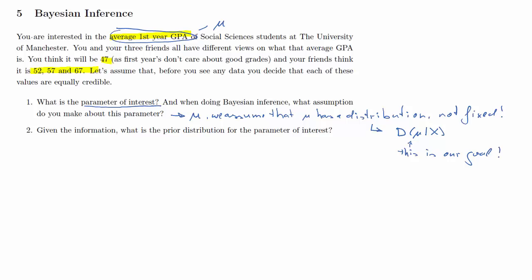So now, if we have that information, what is the prior distribution? We'll see later. We need the prior distribution notationally. That's the distribution of mu without information of any data. Now, in our case, it's perhaps easiest to think of a little sort of number line here. Your guess is 47, and your friend's guess 52, 57, and 67.